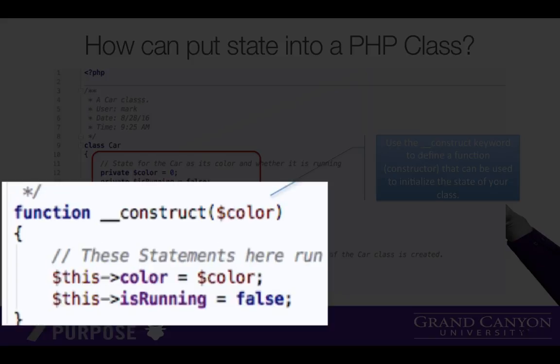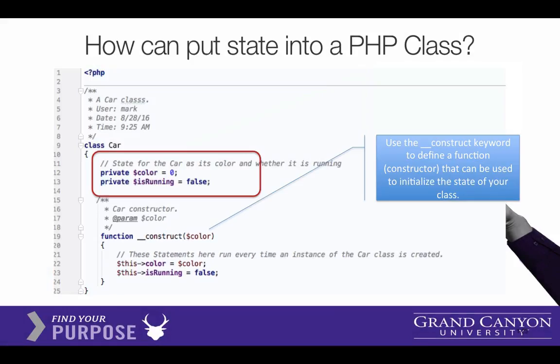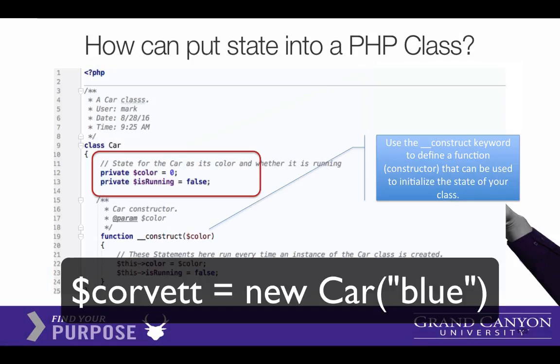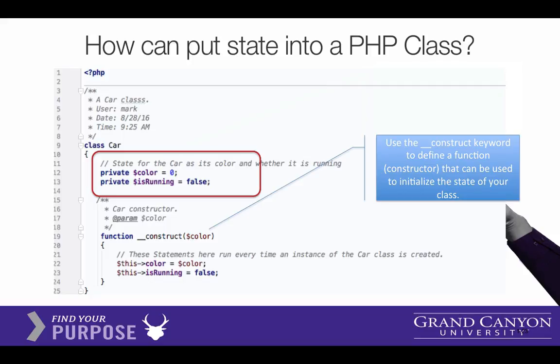The next function below is called the constructor. So if I were to make a new car — let's call it Corvette — and I create a new instance of this car, it would automatically receive the color format and it would not be running, set to false. This special function runs every time we create a new object.